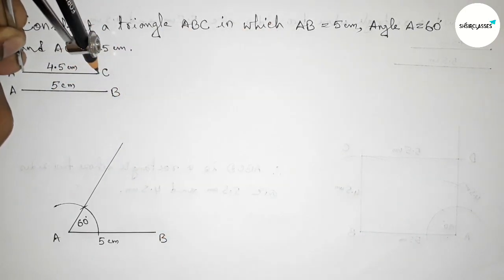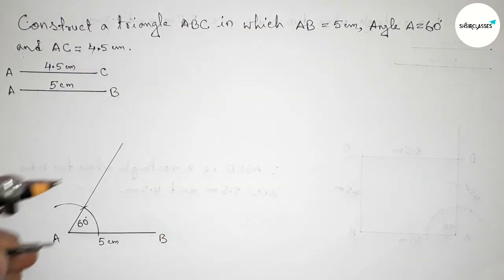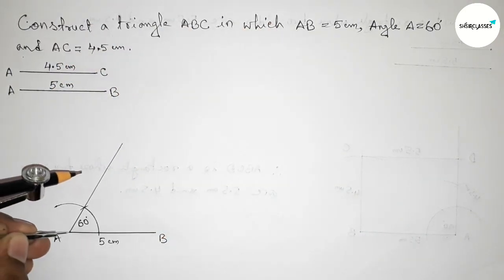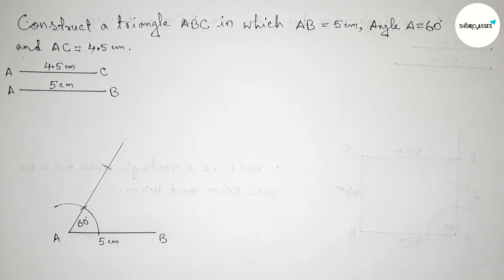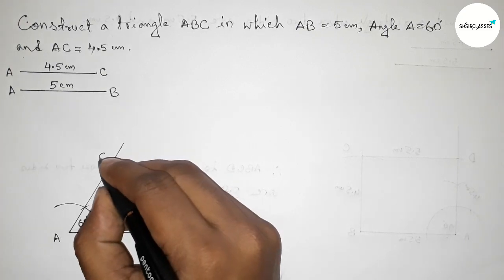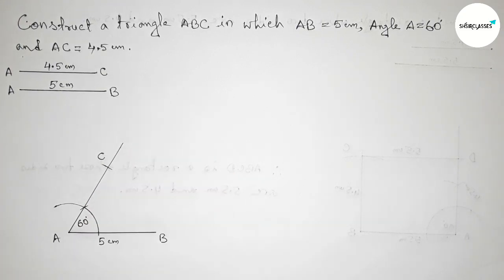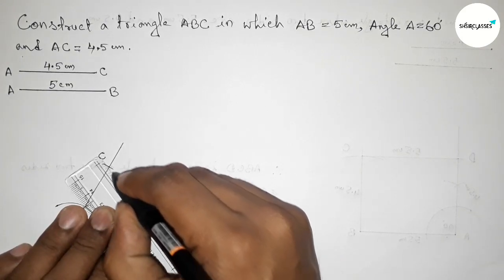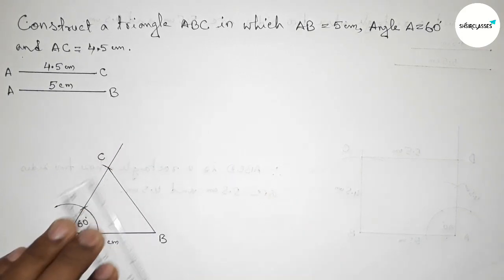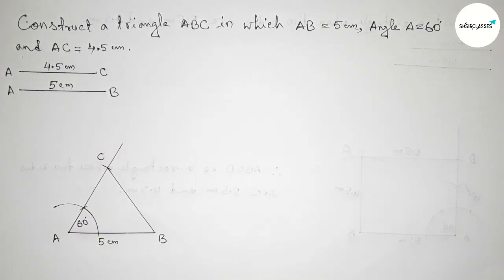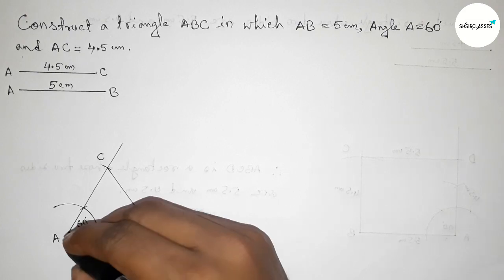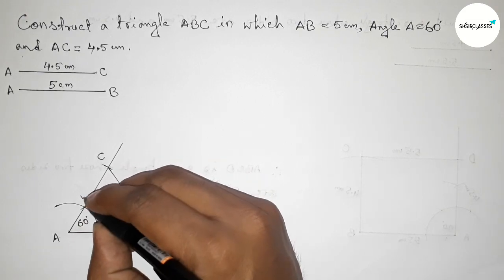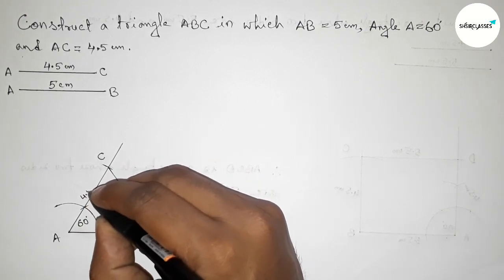Next, taking the length AC equals 4.5 centimeter with the help of the compass. Putting the compass on point A and cutting the arc to mark point C. Then joining side BC to get triangle ABC, where AC equals 4.5 centimeter.